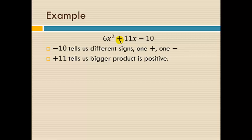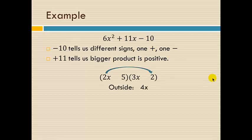We don't know which one's the bigger product yet though until we figure out the numbers. So if we play with this a bit, we might try 2x and 5, 3x and 2. Because 2x times 3x is 6x squared, 5 times 2 is 10. And then we can look at the outside, 2x times 2 is 4x. And the inside products, 5 times 3x is 15x.